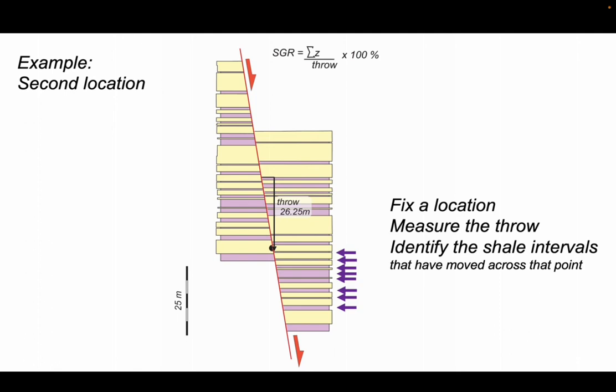Now let's look at the amount of shale that's gone past that point on the fault. This is different because it's a different part of the stratigraphic column. Let's add them up and it comes out at 10.0 meters for the sigma z value.